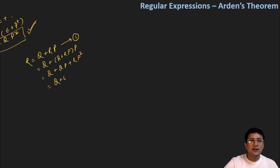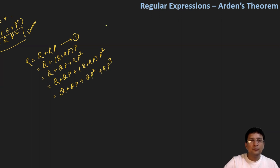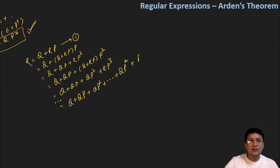After this, again replace r with q + rp. Expanding, this becomes q + qp + qp² + rp³. If we expand this n times, we get q + qp + qp² + ... + qp^n + rp^(n+1).